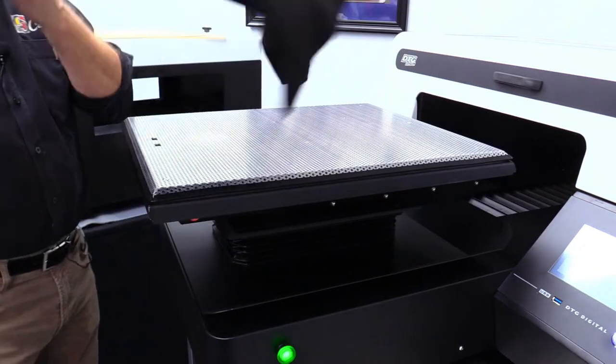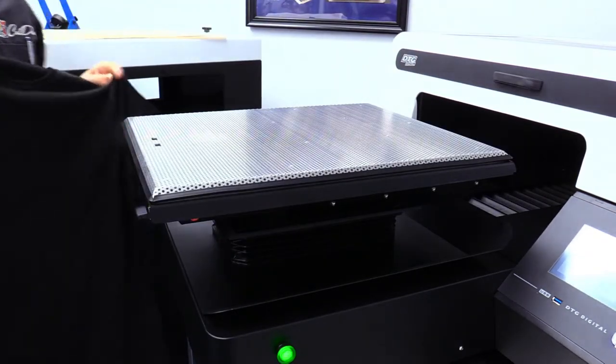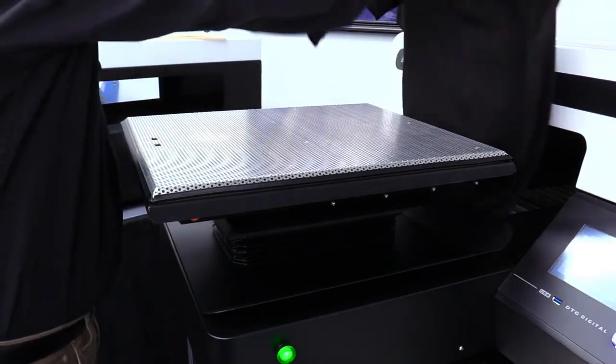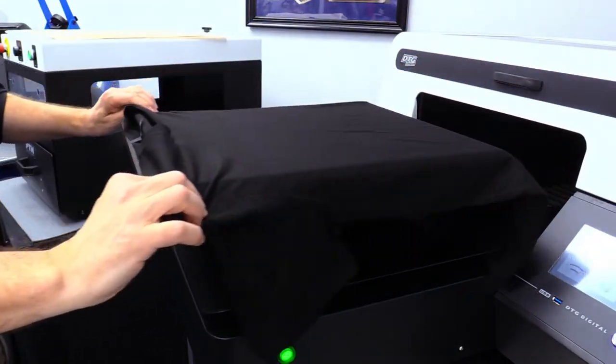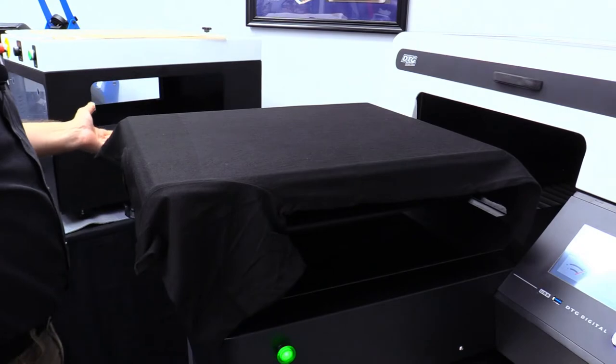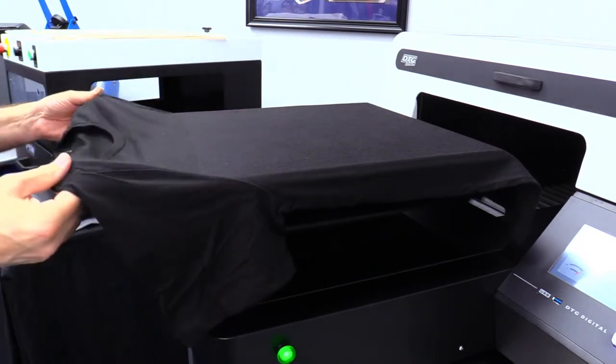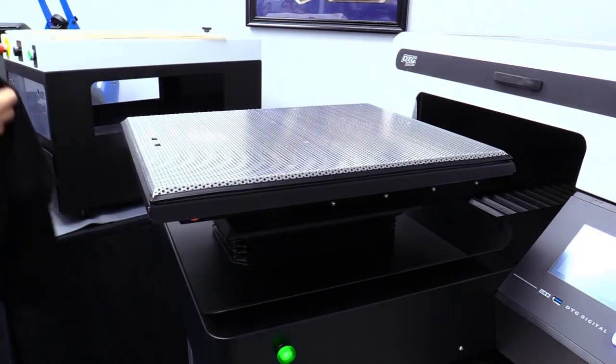Once it's printed, I'm just going to take it off the printer the same way I put it on. So that's the idea, is that it's so simple, there's no skill involved really. I can just lay a shirt on top of the platen, I can print it. When it's ready to go to the heat press, I can just pull it back off.